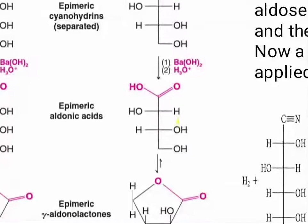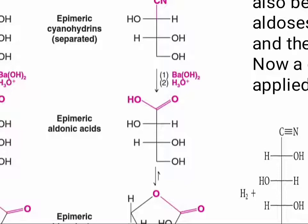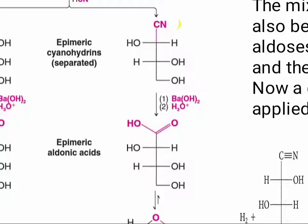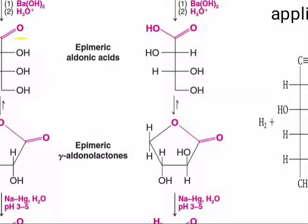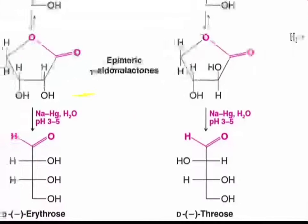Now react with Ba(OH)₂ twice in acidic medium — that means barium hydroxide — and these cyanohydrins' CN groups will be converted into COOH carboxylic acid groups. This carboxylic acid's OH will then attack to form a gamma aldonolactone. Similarly, the other OH will also attack to form its corresponding gamma aldonolactone.